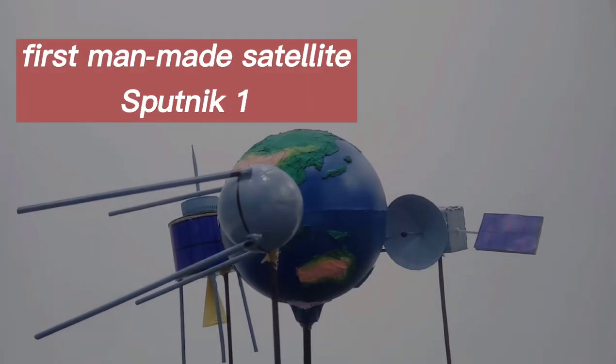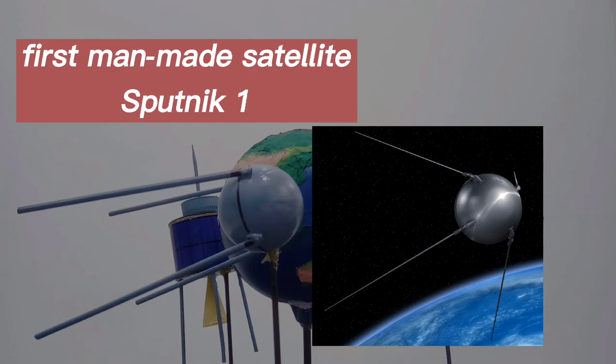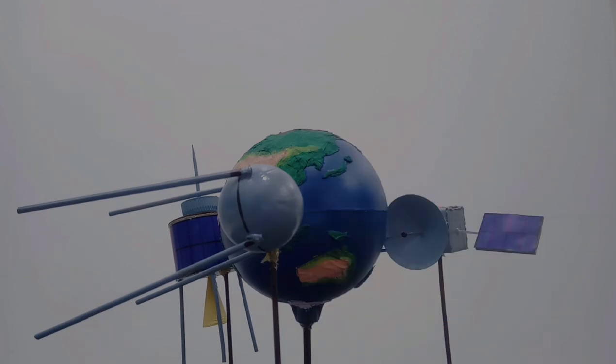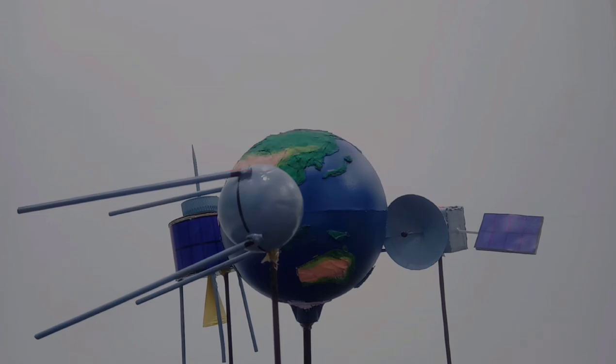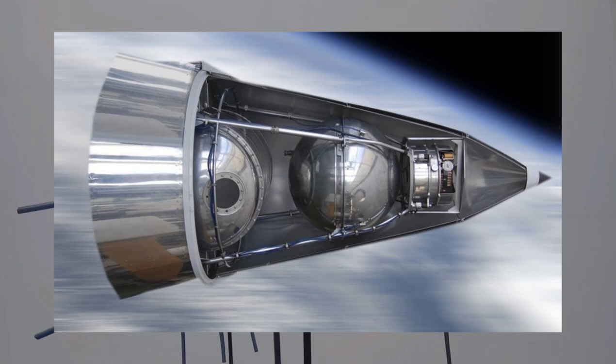The first man-made satellite ever built was the Sputnik 1 by the Soviet Union on 4th October 1957. It then inaugurated a Cold War of making satellites. Shortly after, it released Sputnik 2, which carried a dog into space.